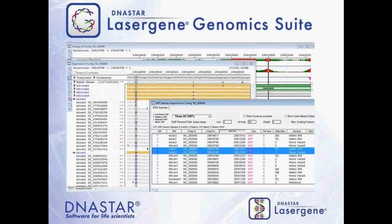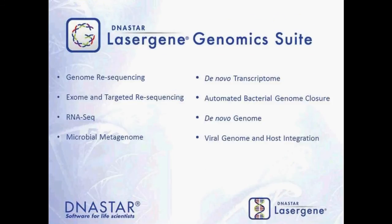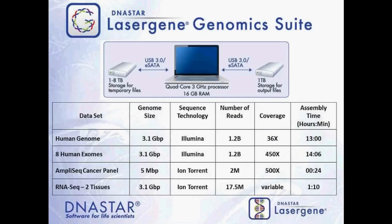Our genomics suite provides all of the software necessary for next-gen sequence assembly and analysis. We support all major next-gen sequencing technologies in a variety of projects, including de novo or reference-guided genome assemblies, targeted resequencing, metagenome and population assemblies, large-scale multi-sample SNP analysis, RNA-seq, chip-seq, and microRNA alignment. We also support workflows such as automated genome closure, cancer genomic analysis, and clinical research analysis. We recommend 16 gigs of RAM as well as a quad-core 3 GHz processor, and a 1 to 8 terabyte external hard drive depending on your project.